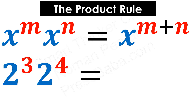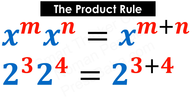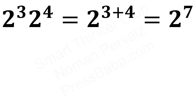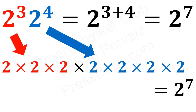For example, if we have 2 raised to the power 3 multiplied by 2 raised to the power 4, it becomes 2 raised to the power 3 plus 4. Adding the powers gives 7, so the result is 2 raised to the power 7. Here, 2 raised to the power 3 means 2 is 3 times, and 2 raised to the power 4 means 2 is 4 times, giving 2 raised to the power 7.